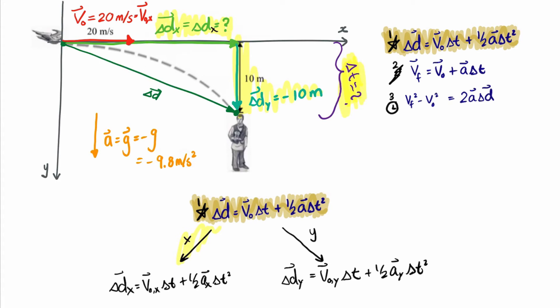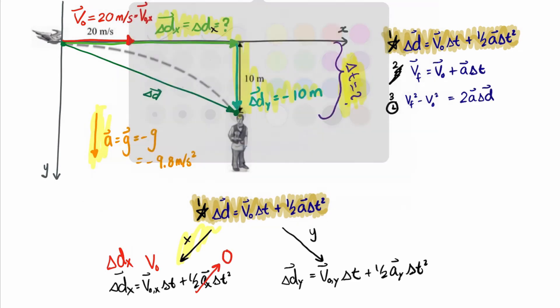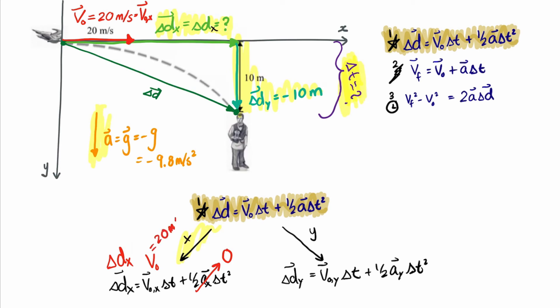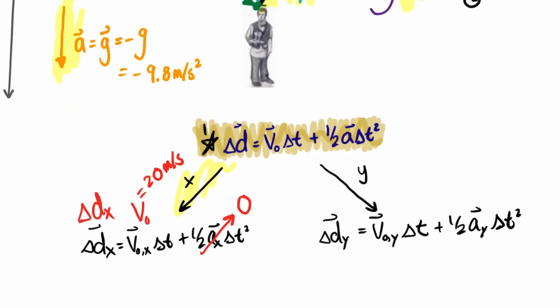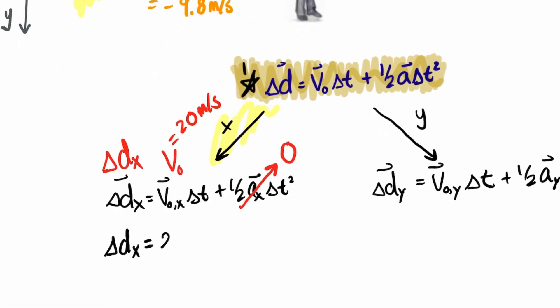Let's look at the x component first. Delta Dx is positive and unknown. The horizontal initial speed is v_initial, which is the full initial speed. Acceleration is pointing down so there is no horizontal component — acceleration in x is zero. Substituting the known values, our horizontal displacement equation becomes: delta Dx equals 20 meters per second times delta t. This is equation number one.